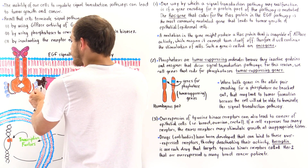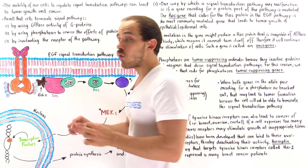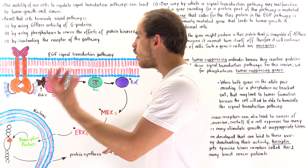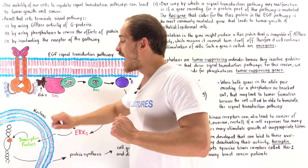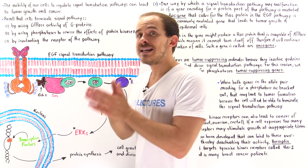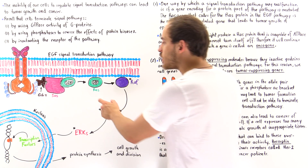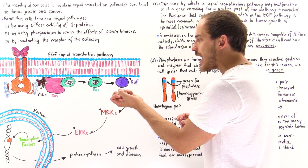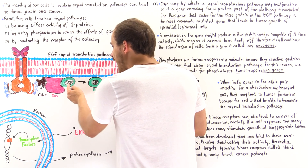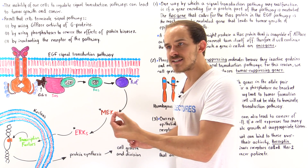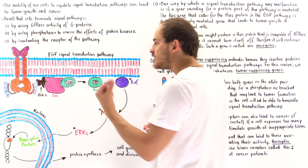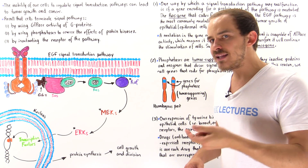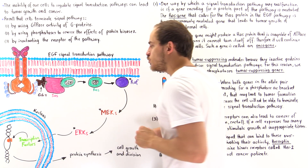Once we form these phosphorylated residues, an important adapter protein known as GRB2 binds onto this section, which calls upon another protein known as SOS. SOS then binds an inactive small G protein known as RAS. When RAS binds onto this structure, a conformational change takes place in the RAS protein, and GDP (guanosine diphosphate) is expelled while GTP (guanosine triphosphate) moves into that pocket. Once GTP binds, that activates the G protein we call RAS.